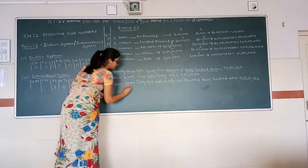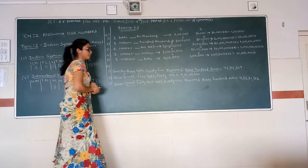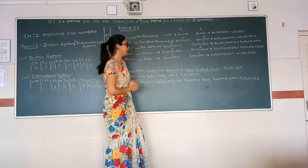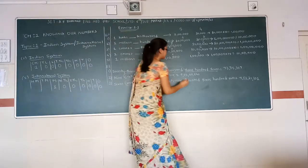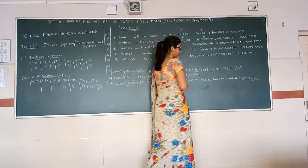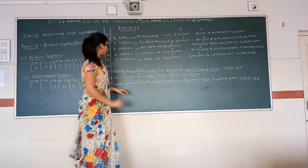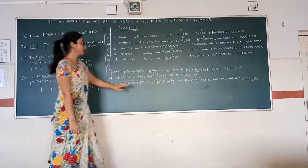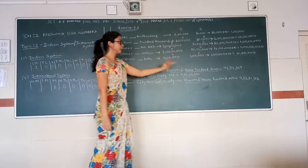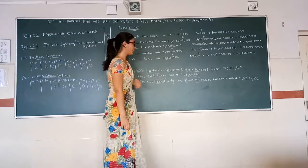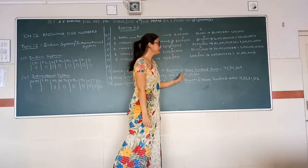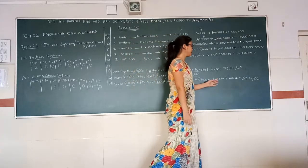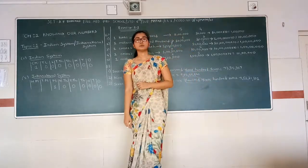Next: seven crore, fifty-two lakh, twenty-one thousand, three hundred and two. First we will write seven and put a comma, then write fifty-two and put a comma, then write twenty-one and put a comma, and then write three hundred and two.